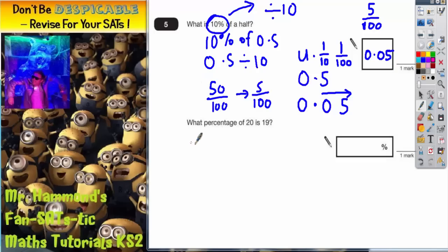The second part of the question: what percentage of 20 is 19? Well, let's write that as a fraction, so we're talking about 19 out of 20. We need to figure out what this is as a percentage. It's like doing a test and getting 19 marks out of 20 marks in a test and saying what percentage is it. So 19 out of 20.